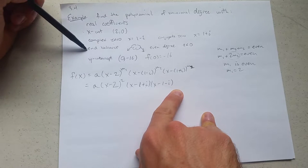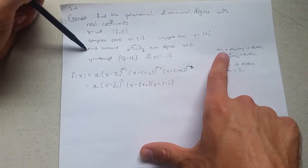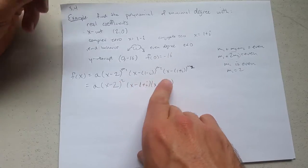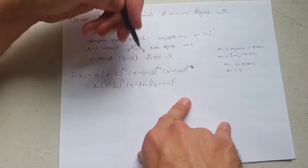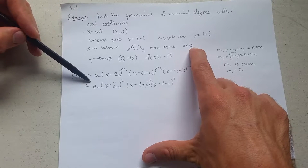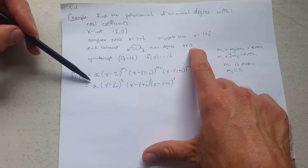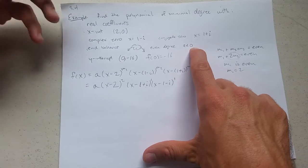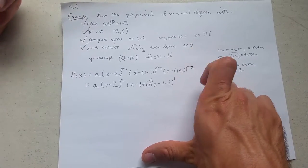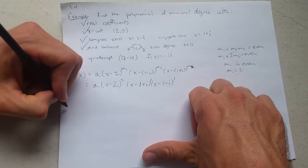So first of all, do we have even degree? We better, because we just spent some time trying to make it even. 2 plus 1 plus 1 is 4. We got even degree. Now a needs to be negative. What negative number should we choose? There's only one piece of information we haven't used already, and that is our y-intercept. We're going to use that right now.